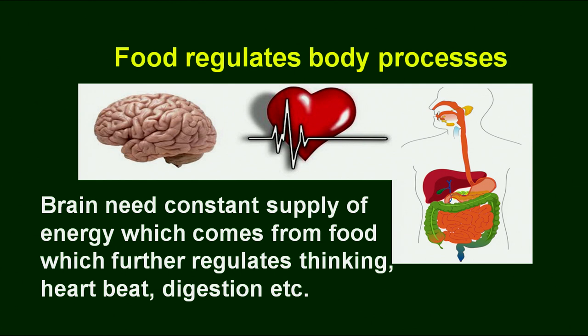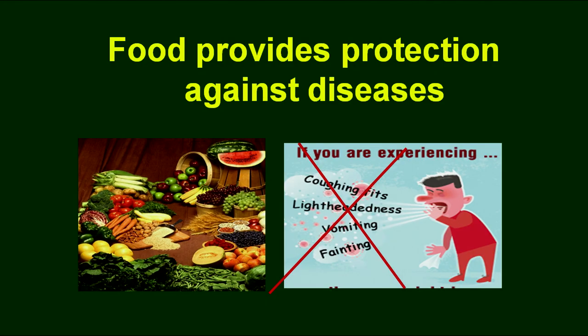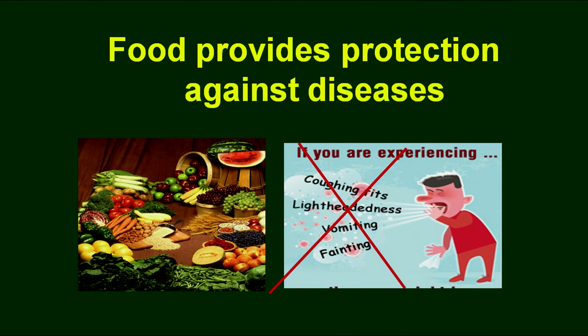Another purpose of food is the regulatory process. Vital functions can be your heartbeat, breathing, digestion, or thinking — the brain needs a constant supply of energy from food, particularly glucose, which regulates thinking, heartbeat, digestion, and other body functions. Food also provides protection against sickness or diseases. A variety of foods are needed in your diet to help protect your body from various symptoms, diseases, or deficiency disorders.